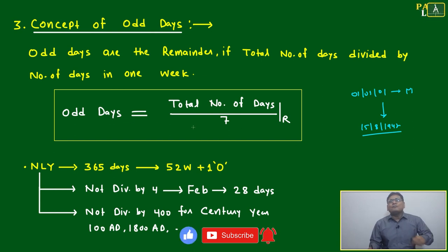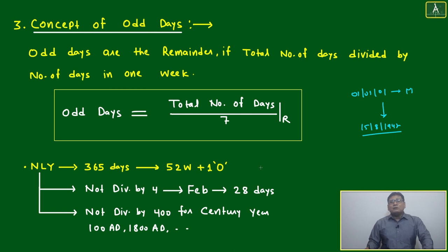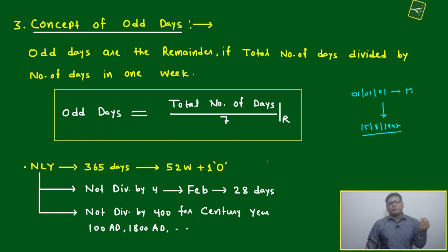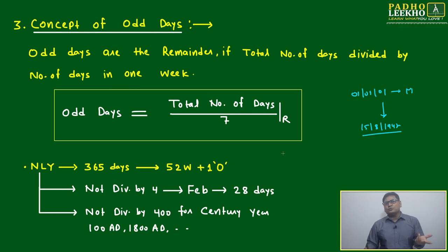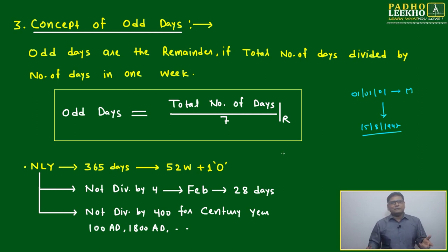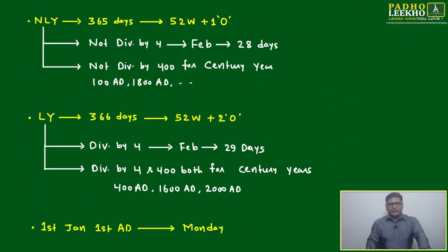This is based on the repetition of the week. Total number of days divided by seven — whatever remainder we get is called odd days, and based on odd days we decide the day of the week. Zero odd days means Sunday, one odd day means Monday, two means Tuesday, six means Saturday. It is a cyclic format.